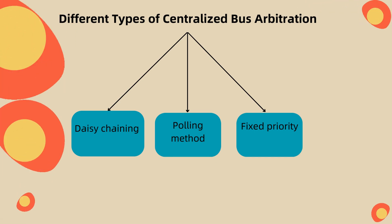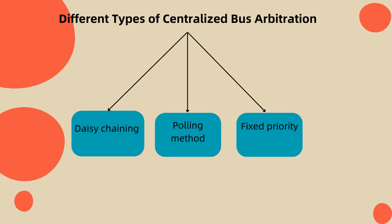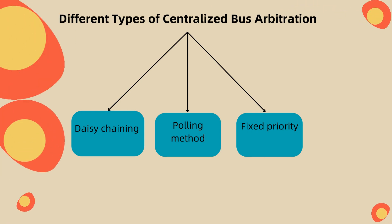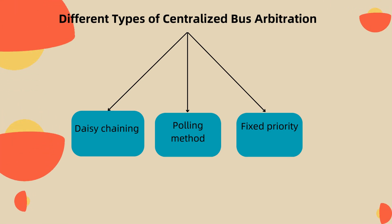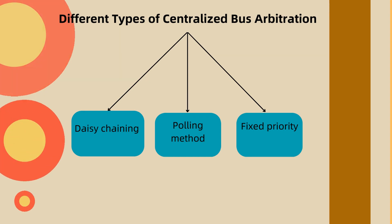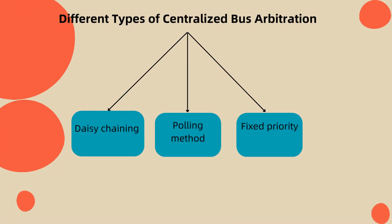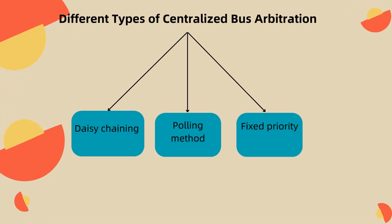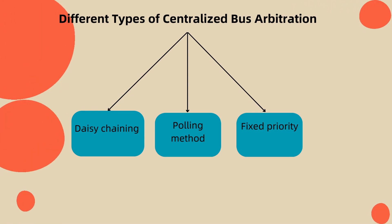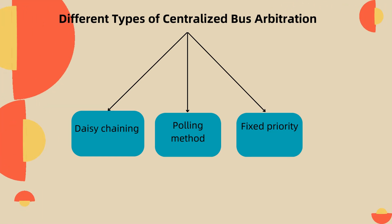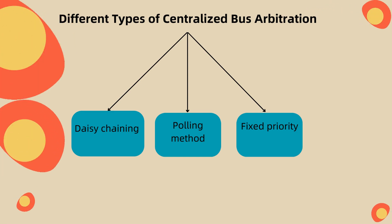The polling or rotating priority method: the controller is used to generate the address for the master. The number of address lines required depends on the number of masters connected in the system. The controller regenerates a sequence of master addresses; when the requesting master recognizes its address, it activates the busy line and begins to use the bus. The fixed priority method: each master has a separate pair of bus request and bus grant lines, and each pair has a priority assigned to it. The built-in priority decoder within the controller selects the highest priority request and asserts the corresponding bus grant signal.